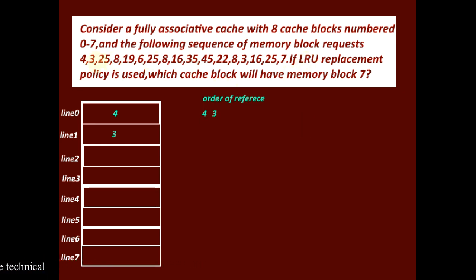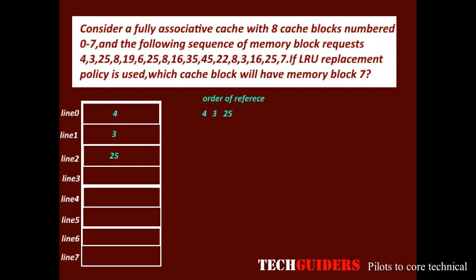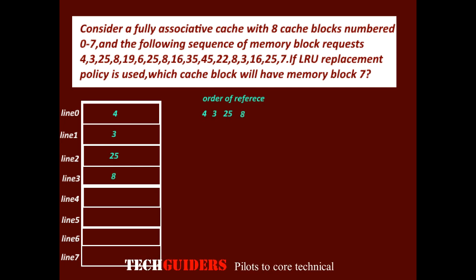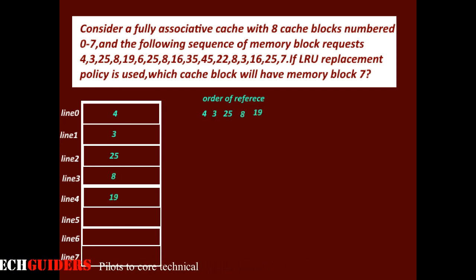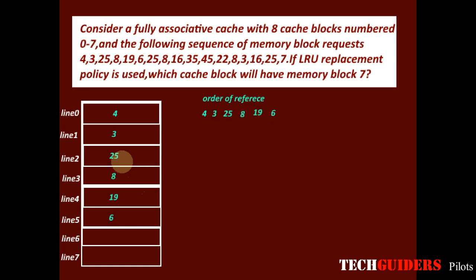Next we have the request for block 3, kept in line 1; then block 25 in line 2, block 8 in line 3, block 19 in line 4, and block 6 in line 5. Now we have another request, again for block 25.